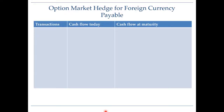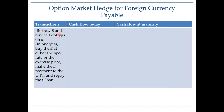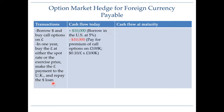The third hedging strategy available when we have a foreign currency payable is an options hedge. This involves borrowing dollars and buying call options on pounds, which gives us the right but not the obligation to buy pounds at $1.50 per pound. Today, we borrow $10,000 to buy call options covering 100,000 pounds, since the call option premium is 10 cents per pound. We borrow at the U.S. interest rate of 5%, use those $10,000 to buy the call options, and the net cash flow today is zero.